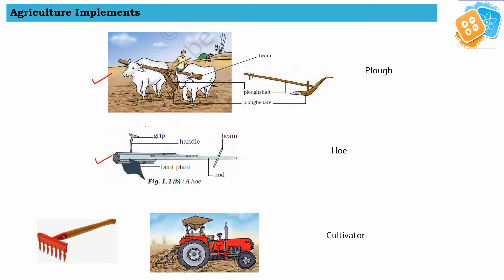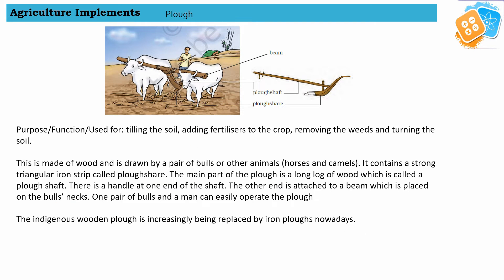This is a manual cultivator and nowadays we are using tractors as a cultivator. Let us first understand about plow. It is used in tilling of the soil, adding fertilizer to the crop, removing weeds, and turning the soil. For all these four purposes we use plow, and the process is known as plowing.